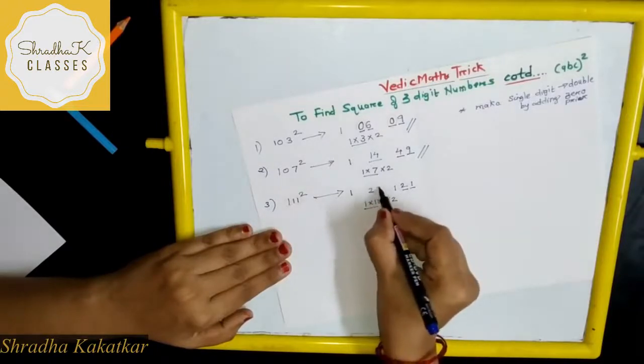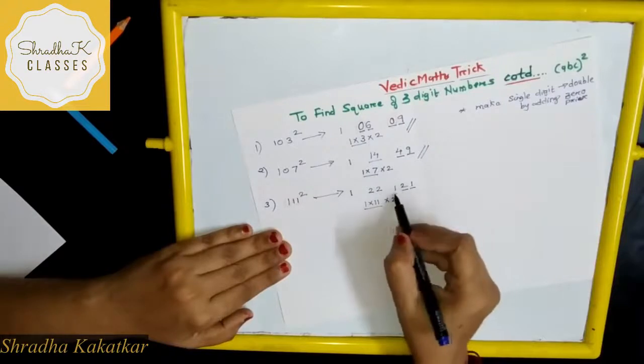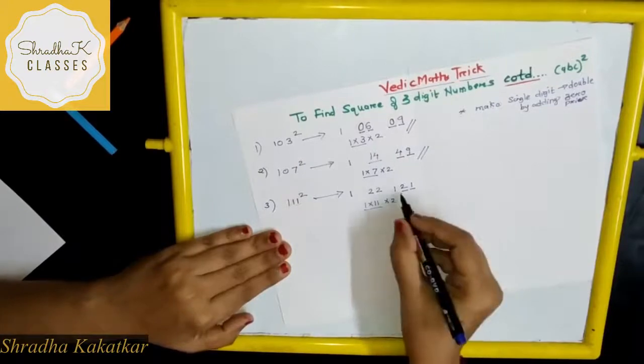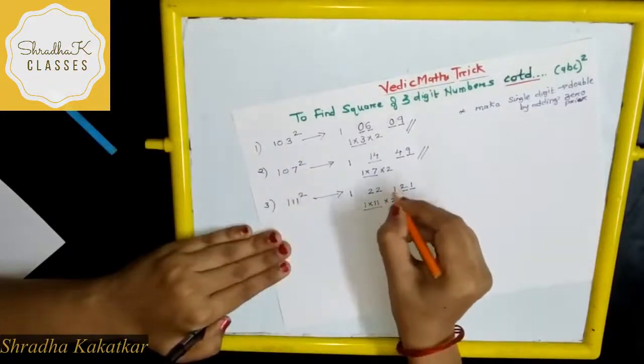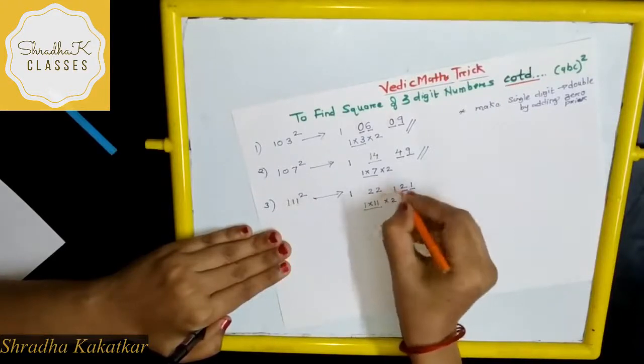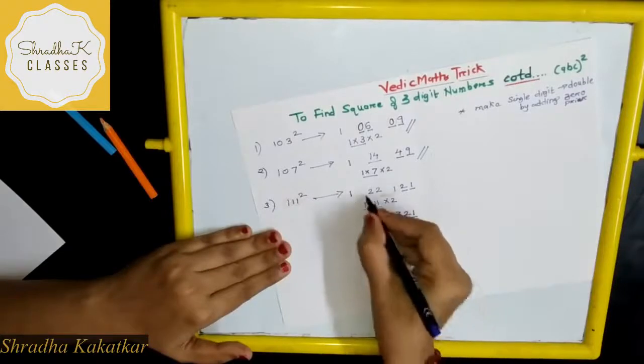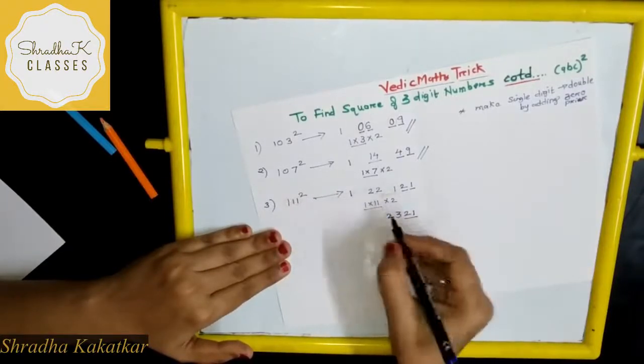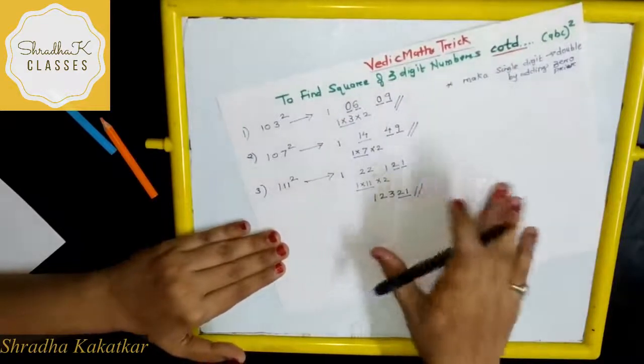Next step is 1 into 11 into 2, so 11 into 2 is 22. This is not our final answer because here we got three digits, so we will have to carry forward. So what you do now? Write 21 as it is. This 1 is carried forward. So 1 plus 2 is 3, then this digit 2 as it is. So this is your final answer.